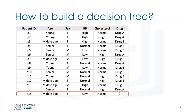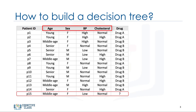We'll call them drug A and drug B. Part of your job is to build a model to find out which drug might be appropriate for a future patient with the same illness. The feature sets of this data set are age, gender, blood pressure, and cholesterol of our group of patients. And the target is the drug that each patient responded to.